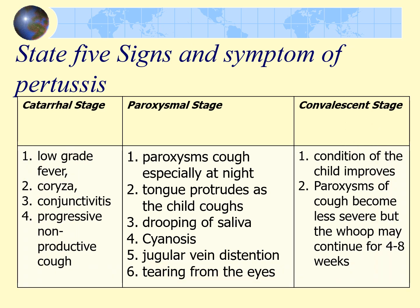The signs and symptoms of whooping cough progress through three stages: catarrhal, paroxysmal, and convalescent. In the catarrhal stage, which lasts about one week, the disease is highly infectious.